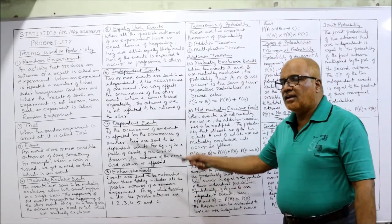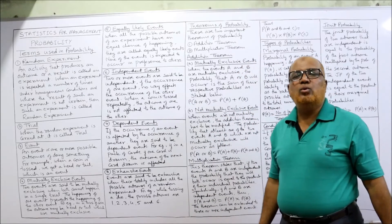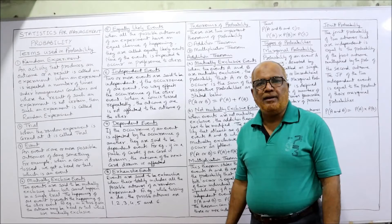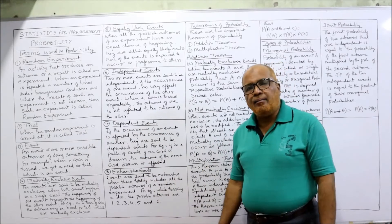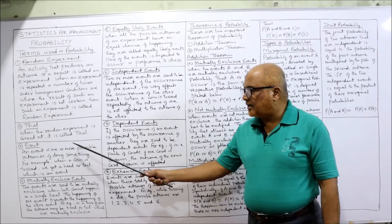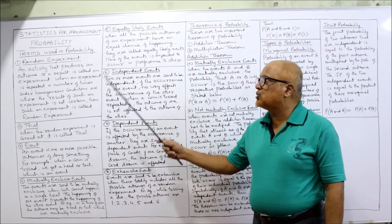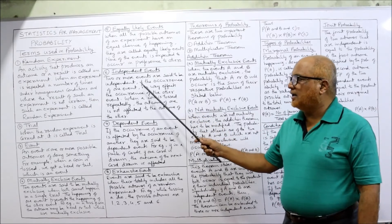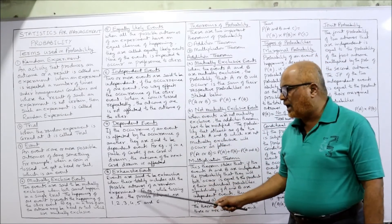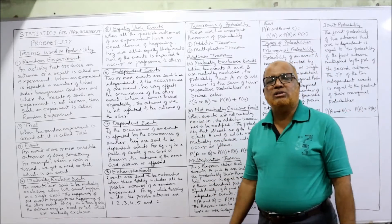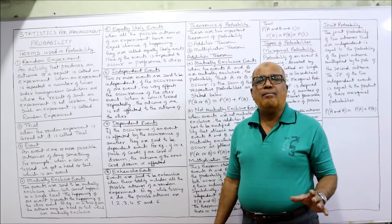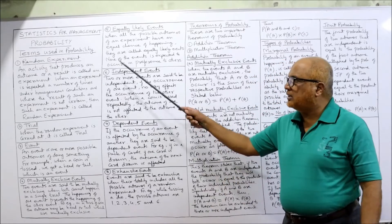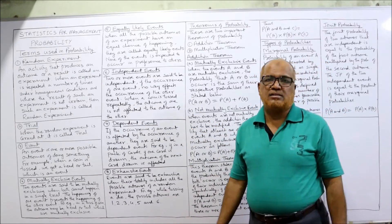So these are the different terms frequently used in probability: random experiment, trial, event, mutually exclusive, equally likely, independent event, dependent event, and exhaustive events. In examination short questions, all these concepts may be asked.